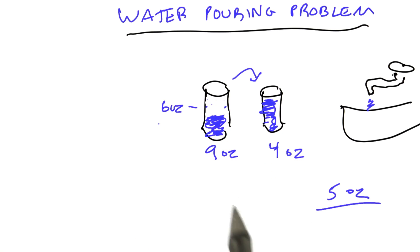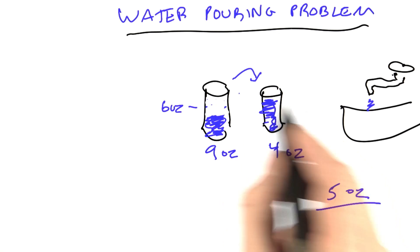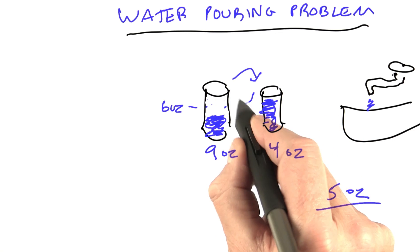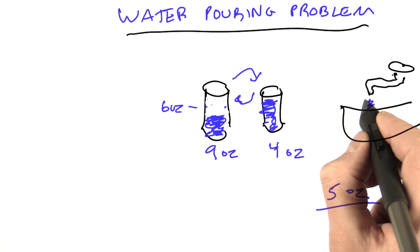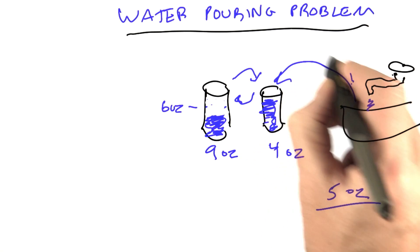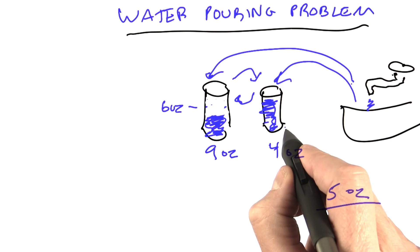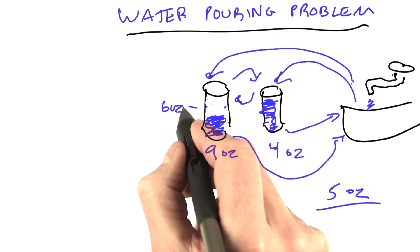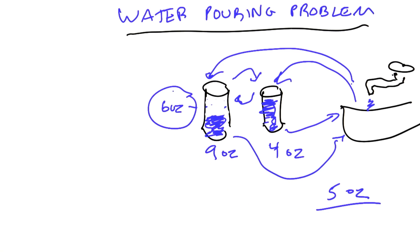6 ounces, it's not as obvious how to get there. So the puzzle is to find a sequence of pouring actions, and the pouring can be from one glass to another. It can go in the other direction. It can go from the faucet into each of the glasses, and it can go from the glasses down the drain. So 6 different actions we can take, and we want to find a sequence of actions that arrives at this goal of 6 ounces.